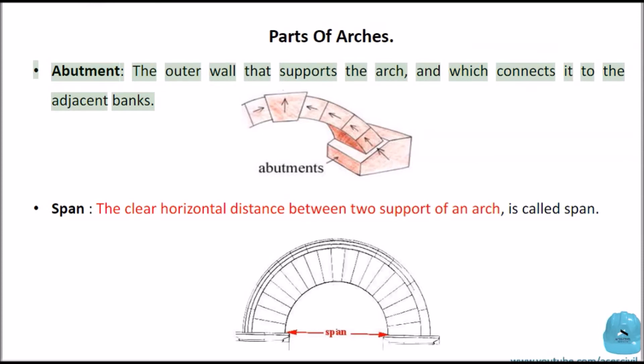Abutment: The outer wall that supports the arch, and which connects it to the adjacent banks. Span: The clear horizontal distance between two support of an arch is called span.